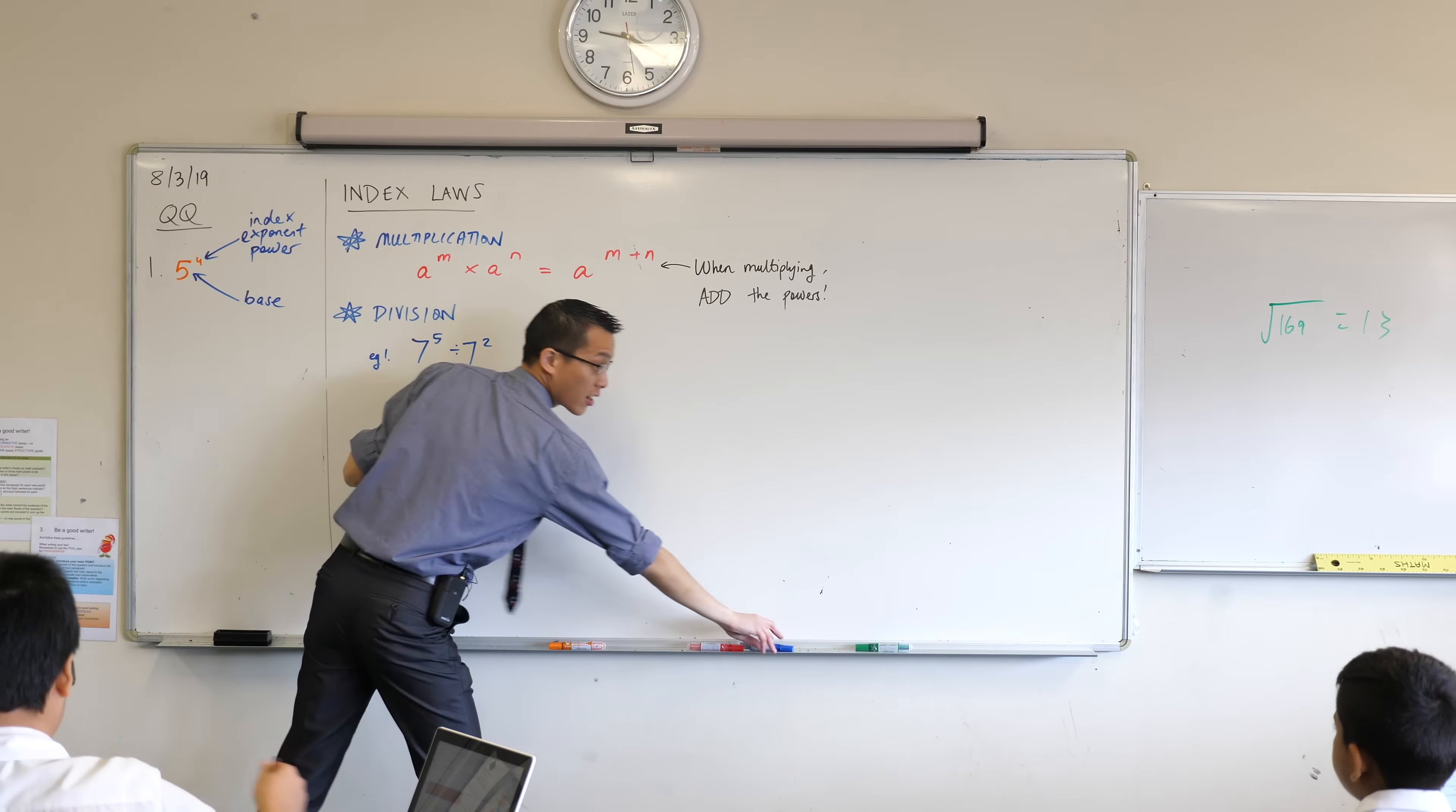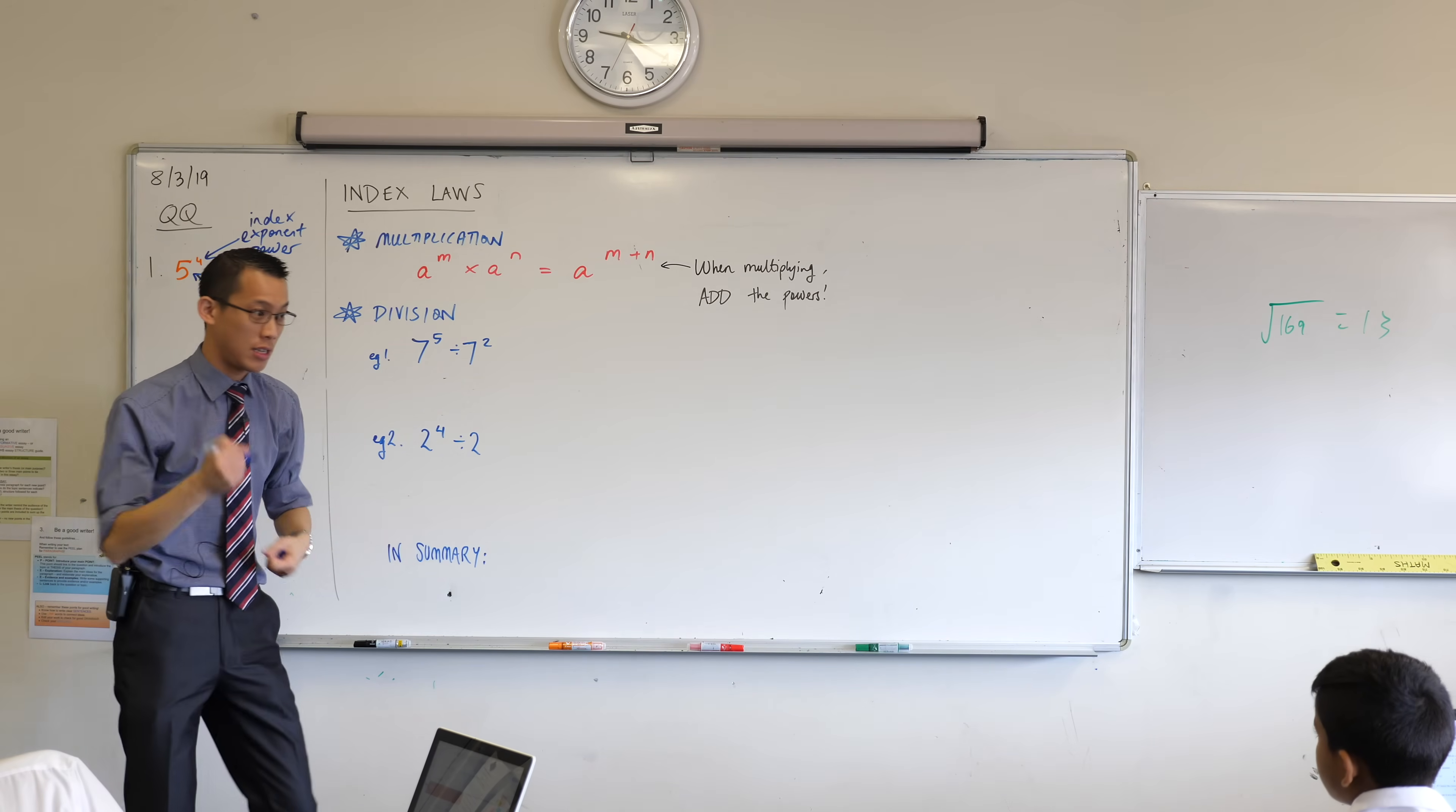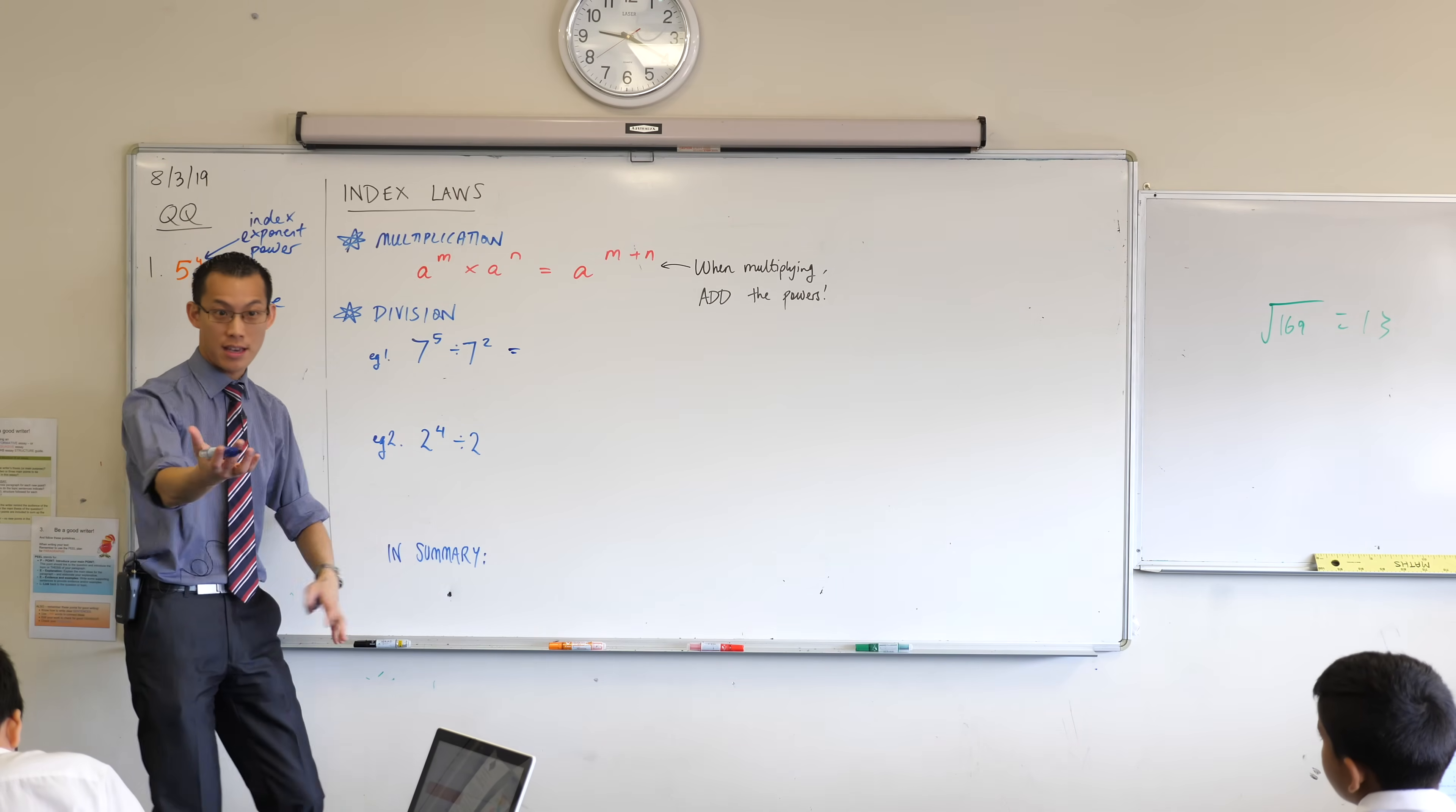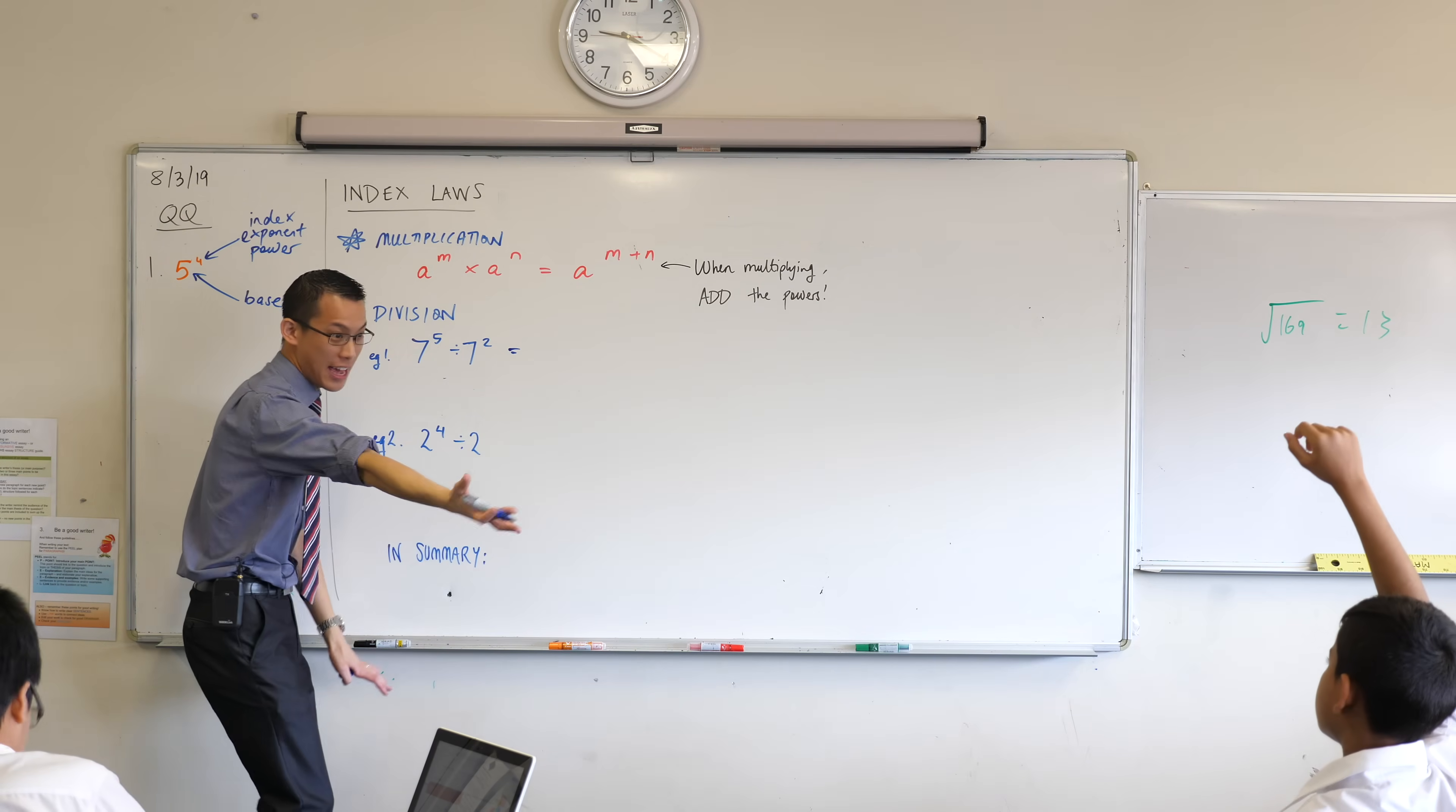Let's think about what this means. Now, just like before, rather than go straight to the answer, I want to try and expand this first so I can see why the answer is what it is. So 7 to the power of 5, how do we expand this? Yes, Andrew. Not yet, we will all get to the answer, but before we get there, do you want to expand it for me?